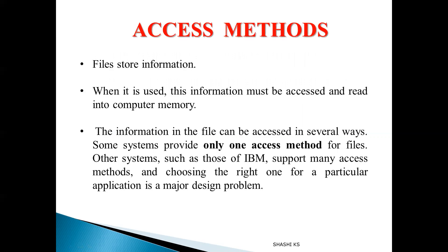The next topic is the different types of file access methods. Files store large amounts of information — millions or billions of bytes — so there must be some way for the OS to access this information and read it into memory. There are two commonly used access methods: sequential access and direct access. Some operating systems support only one type; others support more than one, in which case the application chooses which to use.